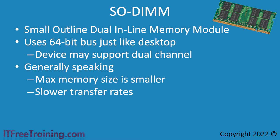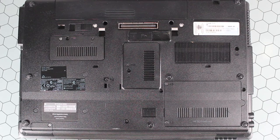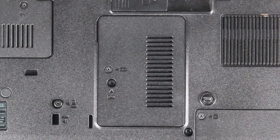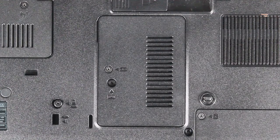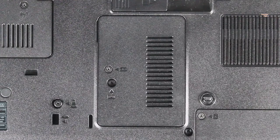Now that we understand laptop memory a bit better, I will now have a look at how to remove and install the memory into a laptop. In this demonstration, I have a laptop that already has memory installed. I will remove the memory from the laptop to show how this is done and then reinstall it. Most laptops will have a panel that can be removed in order to get to the memory, though this may not be the case in all laptops and you may need to take the laptop apart. There may be a few different panels on the back, so look for any markings on the laptop to give you an indication of what is behind the panel.